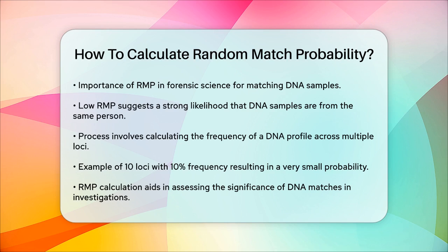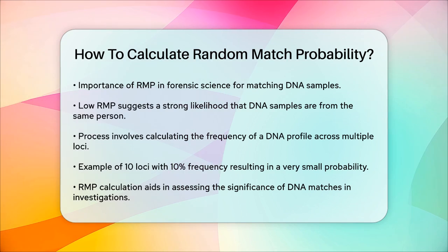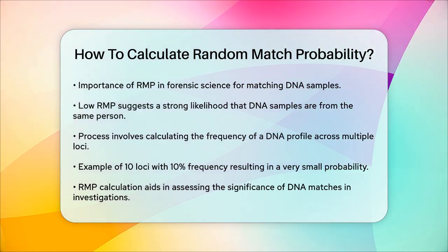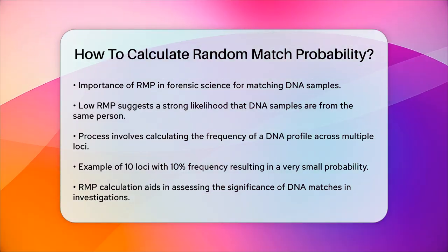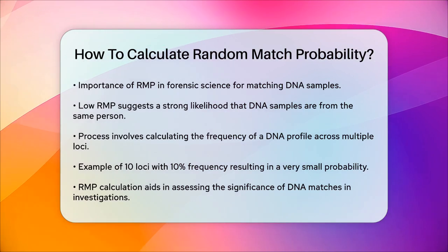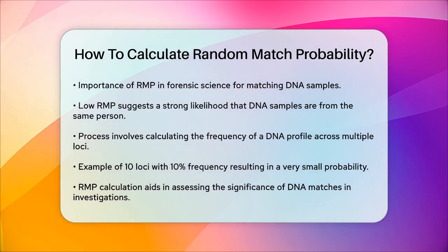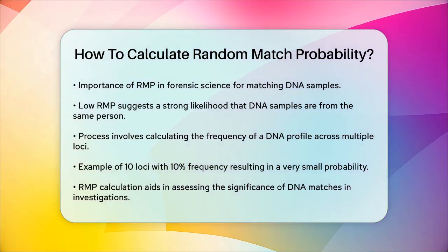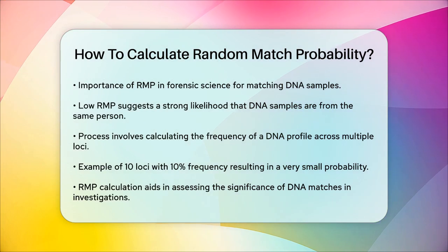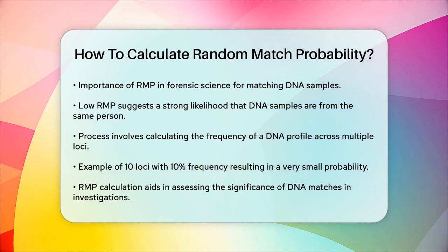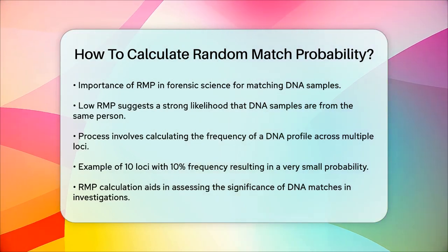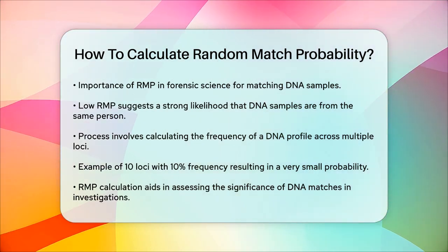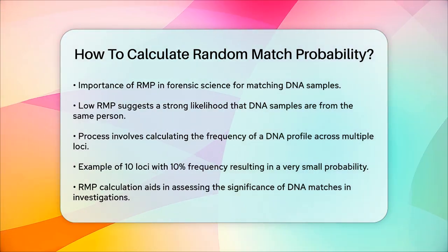In summary, calculating the random match probability involves multiplying the frequencies of each allele at multiple markers to determine how likely it is for a random person to have the same DNA profile. This method helps in forensic science to assess the significance of a DNA match.